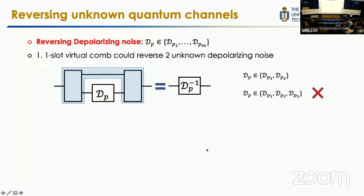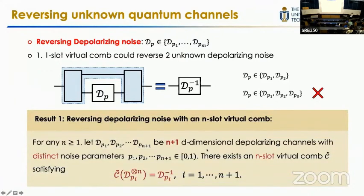If there are three elements, then a one-slot virtual comb is not enough to perform perfect reversion for all these noises. If a one-slot virtual comb can reverse p1 and p2 perfectly, then for p3 there will always be some error. To reverse this set, we need a two-slot virtual comb, meaning querying this process twice. In general, our first result is: for depolarizing noise with n+1 candidate noise parameters, there always exists an n-slot virtual comb which uses this unknown process n times and realizes the inverse of it for all these noise levels.